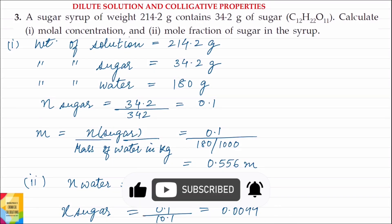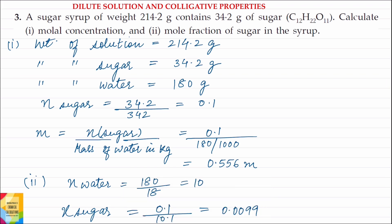Question 3. A sugar syrup of weight 214.2 grams contains 34.2 grams of sugar. The molecular formula of sugar is C12H22O11. Calculate first the molal concentration and second the mole fraction of sugar in the syrup. Sugar syrup is a solution of sugar in water, and the weight given is the weight of the solution.